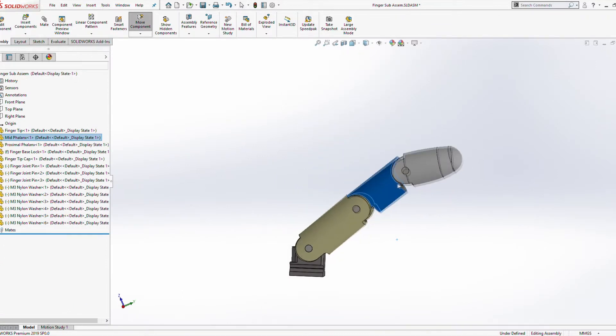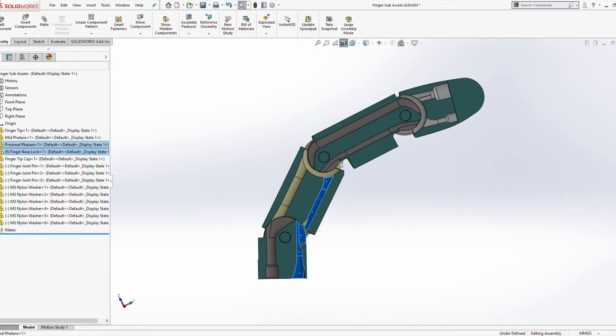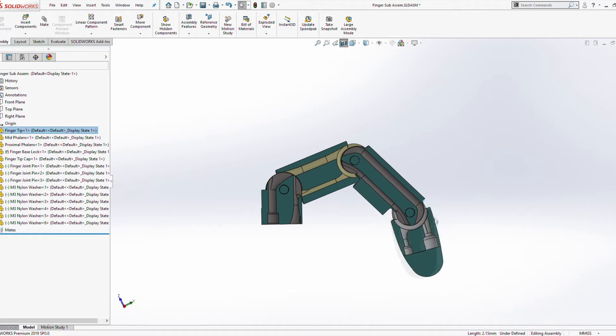The fingers will be three joint linkage systems. And I'm still going to use tendon driven systems. So I'm going to have a tendon passing through a channel inside the finger.